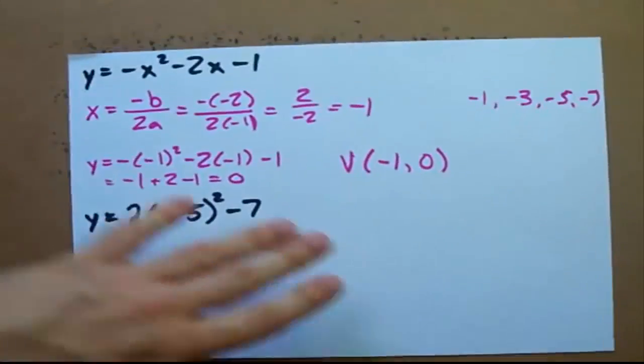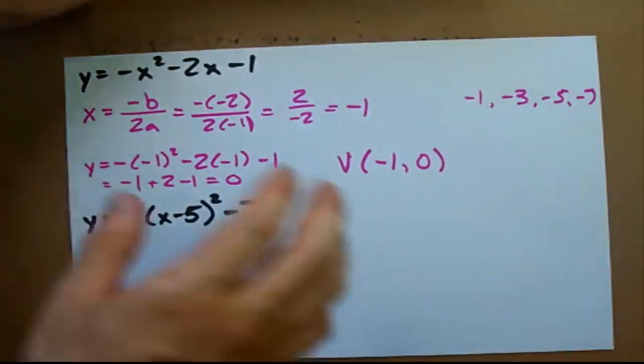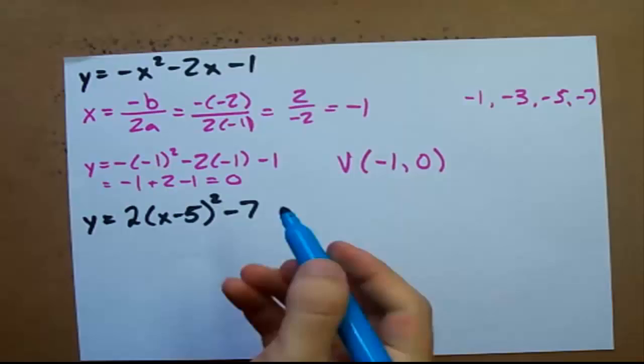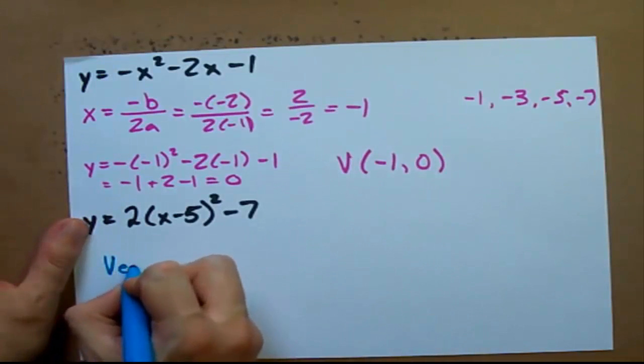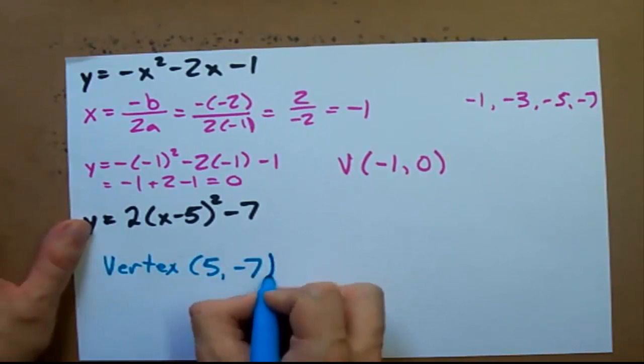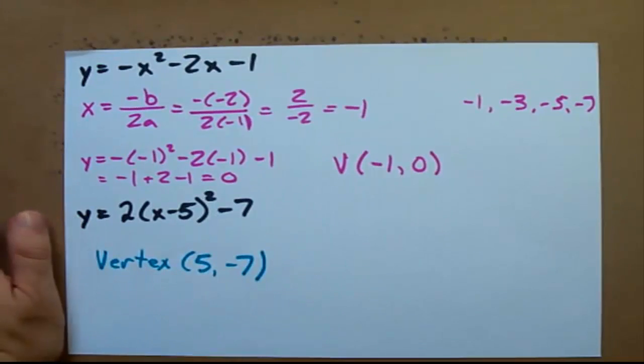Let's do this last one: 2 times (x minus 5) squared minus 7. Now this is also written in one of those nice forms for us where we can read the vertex directly off of it: positive 5, negative 7. Flip the sign in here, keep that as it is.